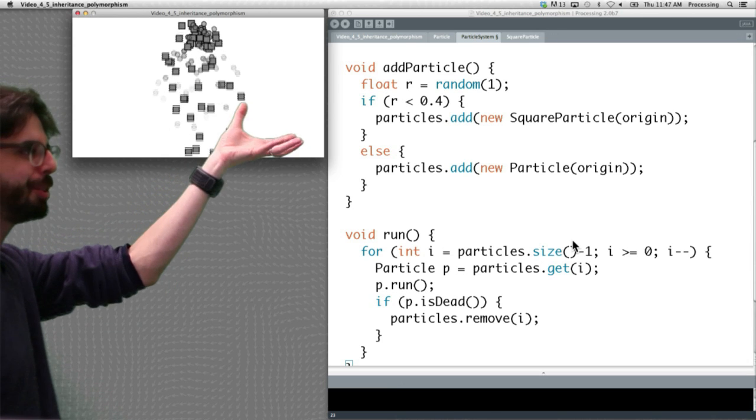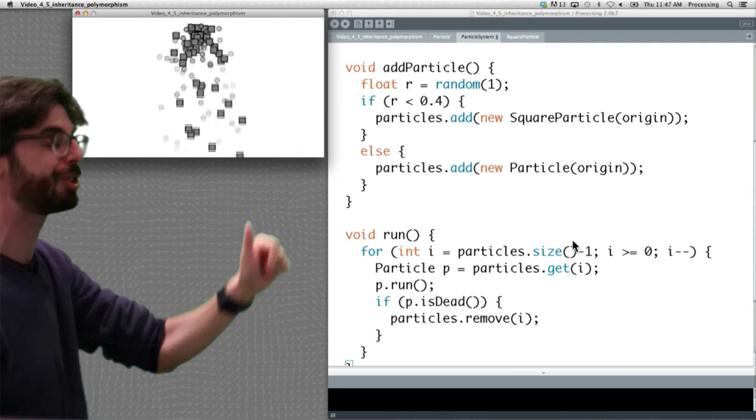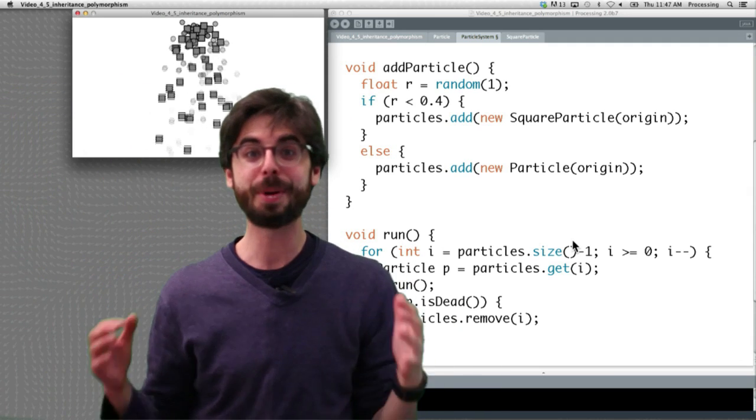And when we run this, we can see here some square, 40% of the time we've got a square particle, 60% of the time we have a circular particle. This is polymorphism. This is very powerful.